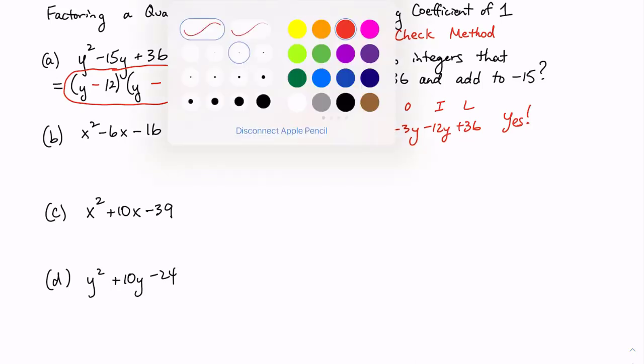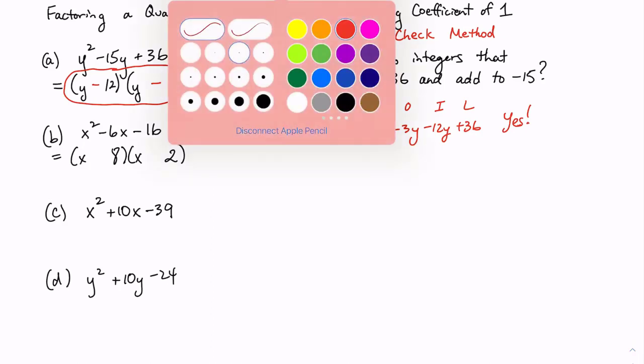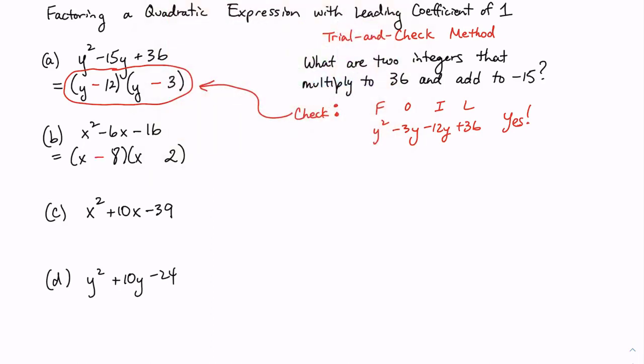Why don't we do a few more? We're going to assume this one has exactly two binomials. X and x for the first position. 16. Should we try 4 and 4? I don't think so. Why don't we try 8 and 2? What do our signs have to be? Let's try subtract 8 or subtract 8x and then add 2x.